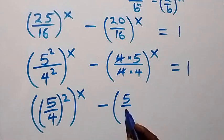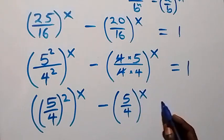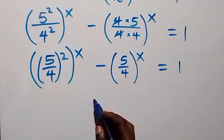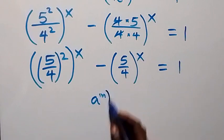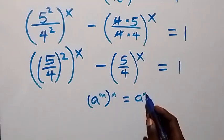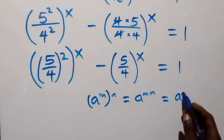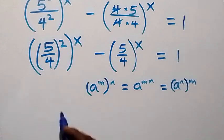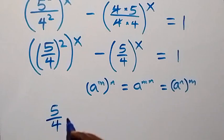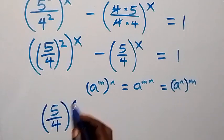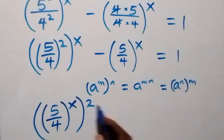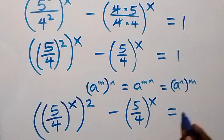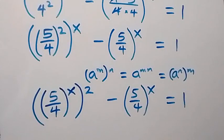Using the law of indices again — a raised to power m, raised to power n, is the same as a raised to power mn — we can interchange these powers. So (5/4) raised to power x, then raised to power 2, minus (5/4) raised to power x equals 1.